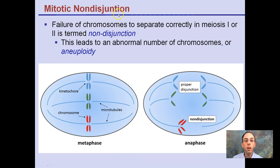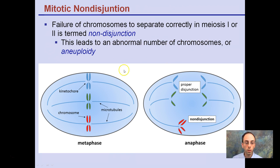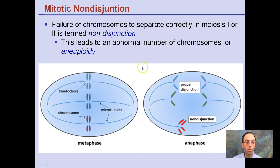Meiotic non-disjunction is the failure of chromosomes to separate correctly during meiosis 1 or 2, and is termed non-disjunction. This leads to an abnormal number of chromosomes. In proper disjunction, everything lines up on the metaphase plate and perfectly separates. In non-disjunction, instead of separating, two chromosomes are pulled to the same side during anaphase — this would cause all sorts of problems.